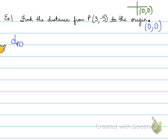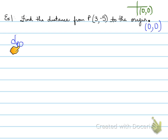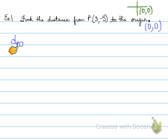We want to find the distance from P to O, so I write D for distance — or L for length. I write PO as a subscript to identify which distance we're calculating, since some examples require finding more than one distance. We say D from P to O, then apply the formula.